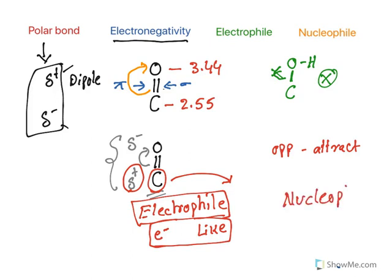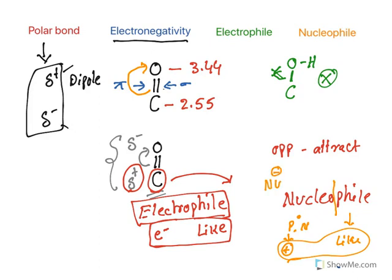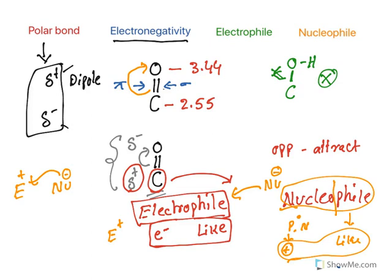Another term is nucleophile. 'Nucleo' means nucleus — inside the nucleus you have protons, which carry a positive charge, and 'phile' means like. So a nucleophile is a species that likes a positive charge and is attracted toward electrophiles (E+). In chemistry, there is always a reaction between an electrophile and a nucleophile due to positive-negative attraction. In carbonyls, since carbon is the electrophilic center, it is attacked by a nucleophile. Understanding this is the key to mastering carbonyl chemistry mechanisms.